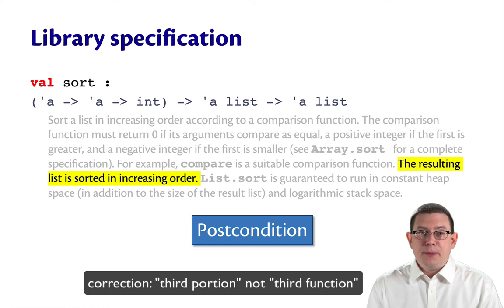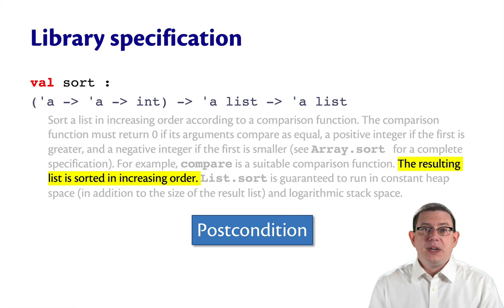The third line here gives a postcondition, so we could write returns colon in front of this. The resulting list is sorted in increasing order.